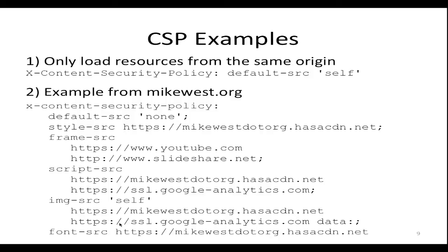We've got an example here from mikewest.org. He's a developer on the Chrome team based out of Germany, and on his personal website this is the content security policy he uses. You can see he's got the default source as 'none,' styles being loaded from his content delivery network, only allowing framing from YouTube and SlideShare, scripts and JavaScript coming only from his CDN or from Google Analytics, images from his CDN or Google Analytics or any data URLs, and fonts only from his CDN. By defining these trusted locations, we are minimizing and mitigating the potential risk of cross-site scripting attacks.